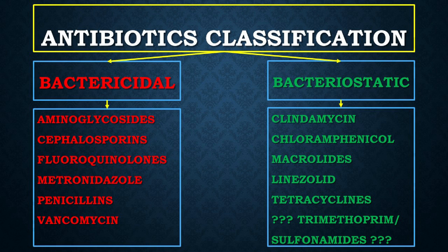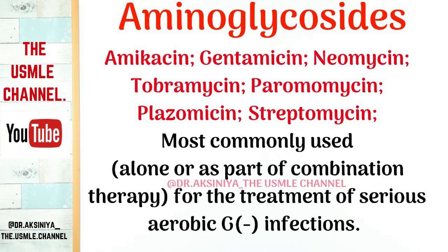We have bactericidal and bacteriostatic antibiotics. The bactericidal antibiotics are those that kill the bacteria. Here we have the aminoglycosides, with antibiotics like amikacin, gentamicin, neomycin, tobramycin, paromomycin, plazomicin, and streptomycin. This is one of the high-yield notes posted on our official Instagram account daily — follow us there for more high-yield notes.